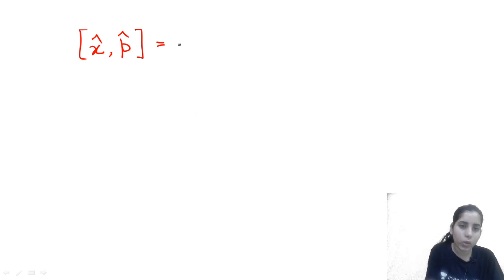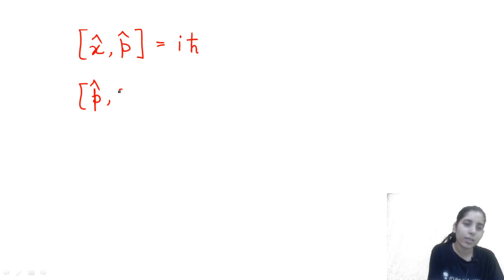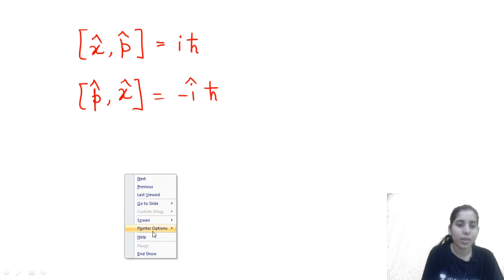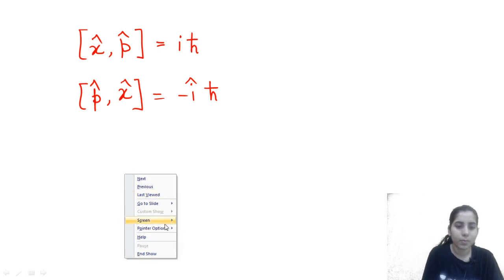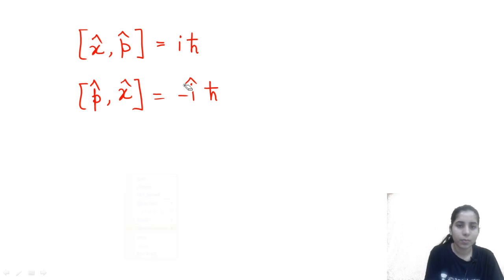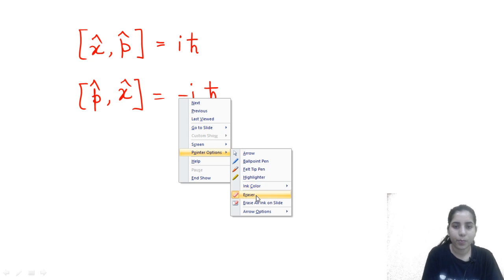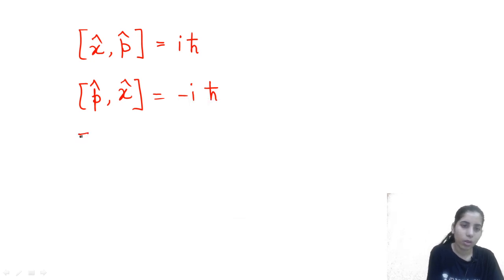The value of [X, P] is iota h-bar - that is i times ħ. Next, what is [P, X]? That commutator bracket is going to be minus iota h-bar. Clear? And [X, Y] gives minus iota - essentially zero for position-position commutators of different components.